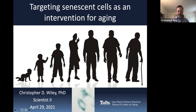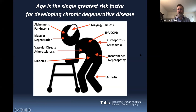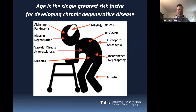It probably doesn't come as a surprise to most of you that aging is the number one risk factor for developing a host of degenerative conditions. Whether we're talking about Alzheimer's and Parkinson's in our brains, macular degeneration in the eye, osteoporosis, arthritis, diabetes, all of these conditions and many more become much more prevalent as we get older. Because of that, it's really important to consider age as a risk factor for so many different conditions.